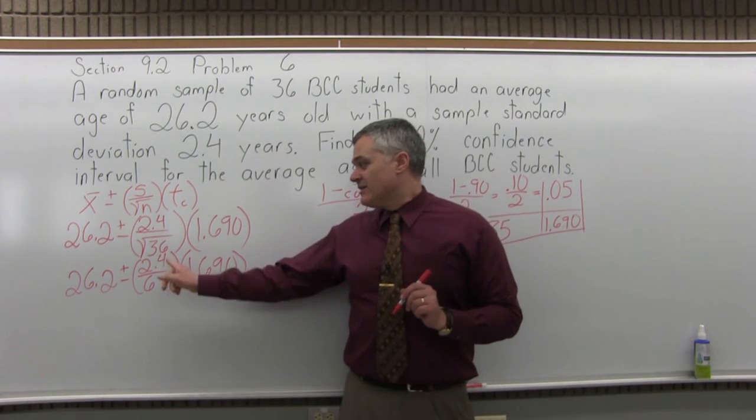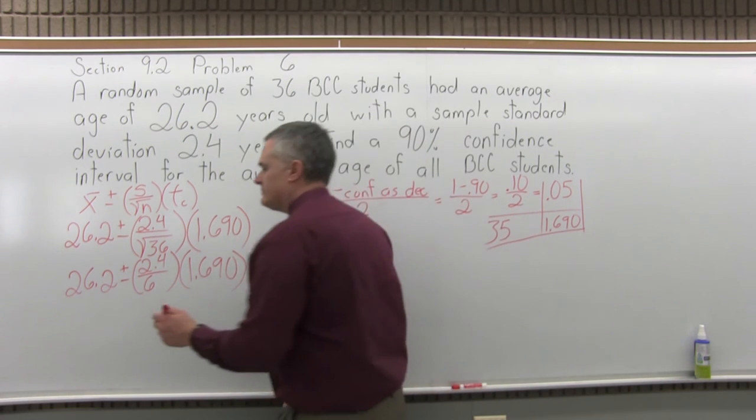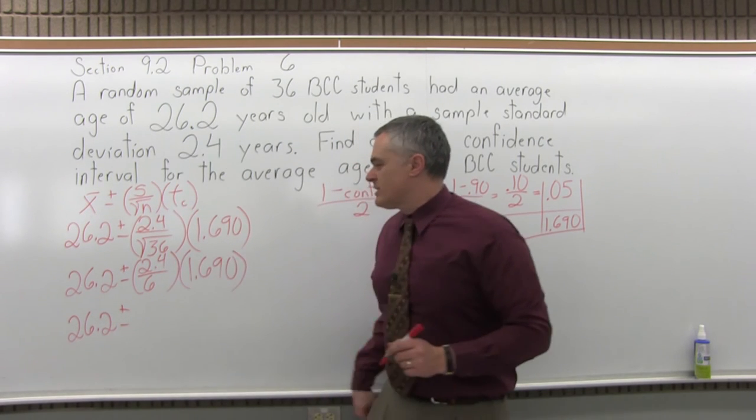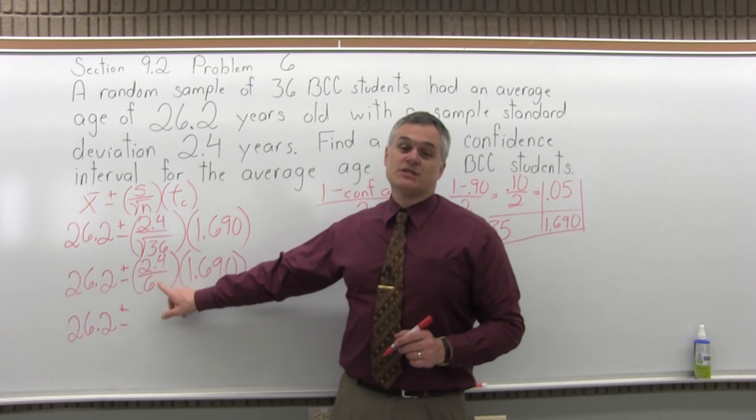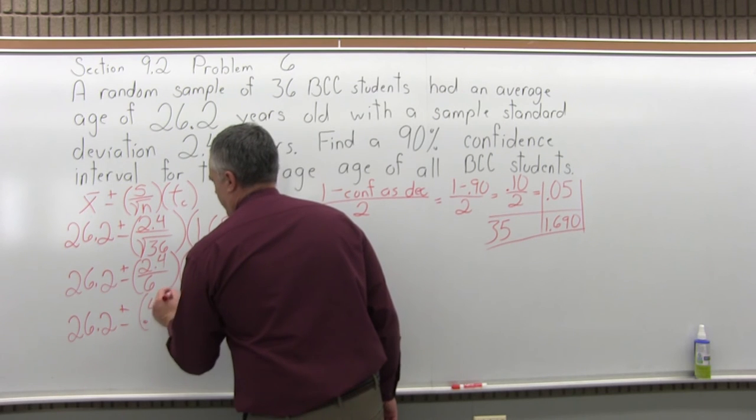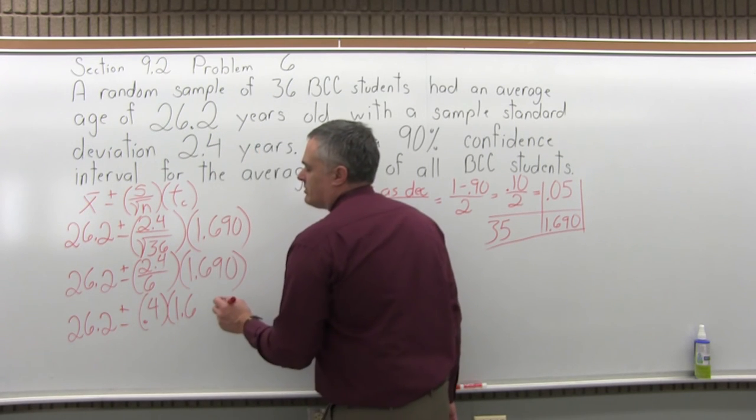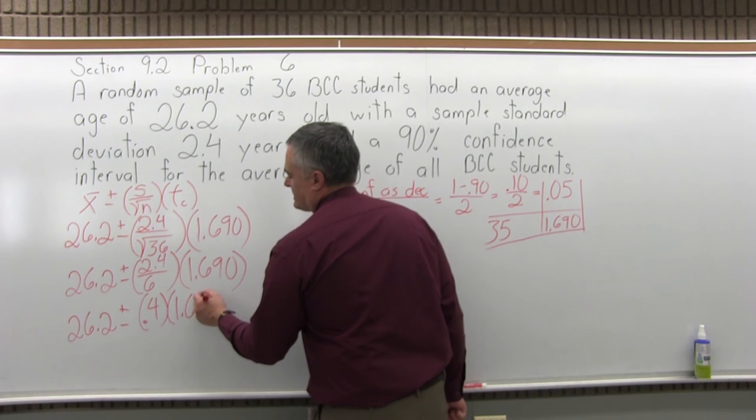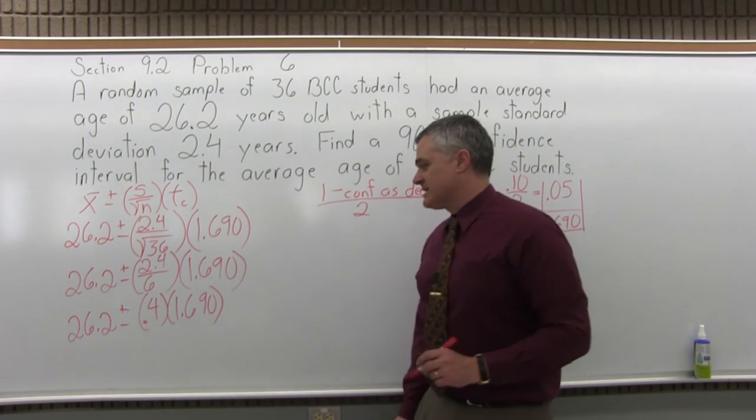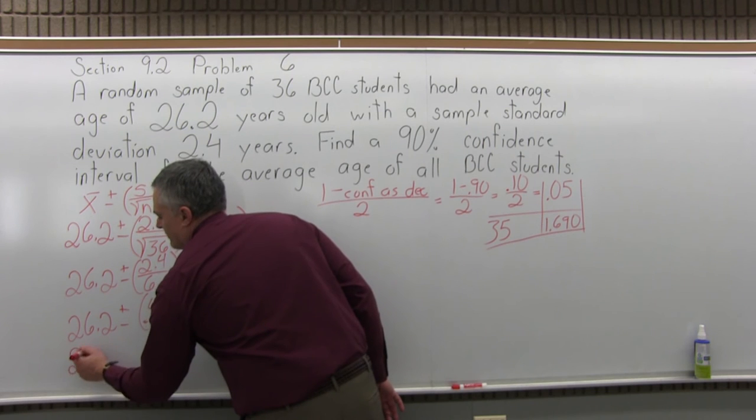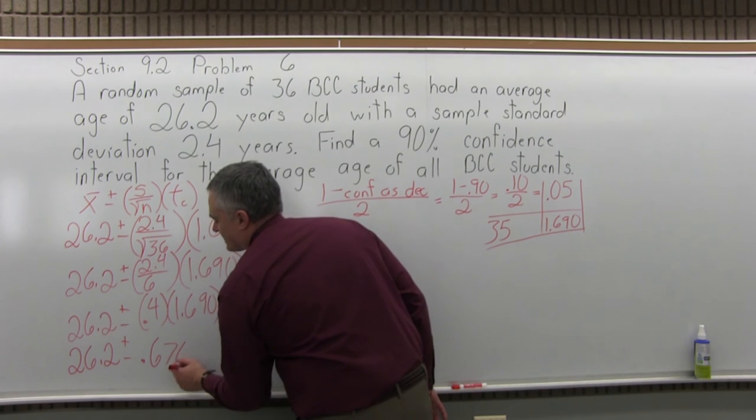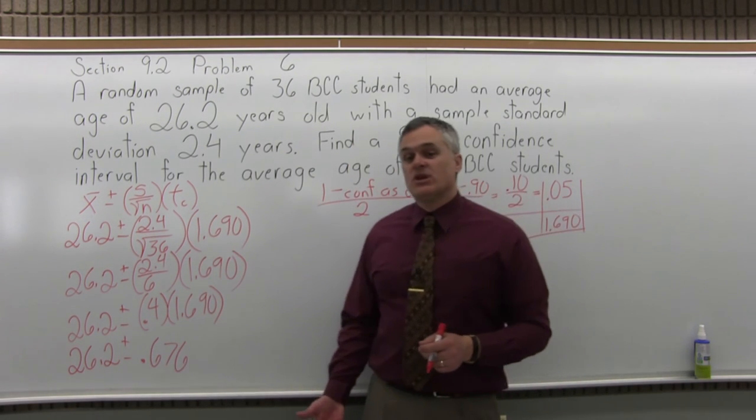Now what happens next is I can divide 2.4 divided by 6. So that'll be 26.2 plus or minus. I will briefly pretend that it's 24 over 6, which I know is 4. So since it's 2.4, I know it's .4 is the answer for 2.4 divided by 6, or you could just do it on a calculator. So I have 26.2 plus or minus .4 times 1.690. So now I can go ahead and multiply .4 times 1.690, and that will give me 26.2 plus or minus .676. So that .676 is what you would call the margin of error.